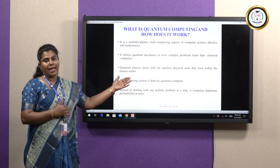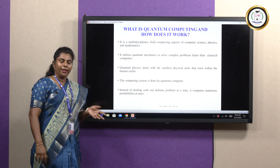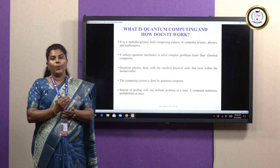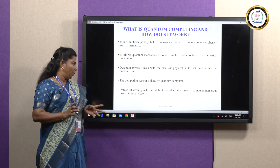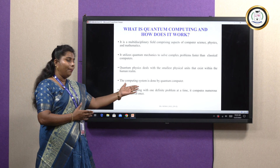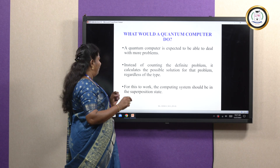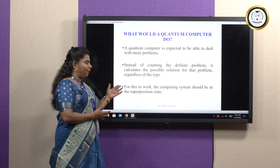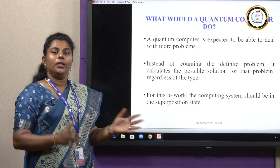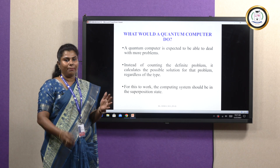Quantum physics deals with quantum as the smallest discrete unit. In order to perform these calculations, we need a special computer called a quantum computer. Instead of dealing with one definite problem, it computes numerous probabilities at once. A quantum computer calculates all possible solutions for a problem regardless of the type. The computing system should be in the superposition state, which I will discuss in forthcoming sessions.